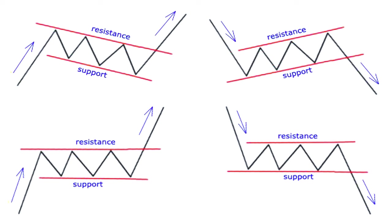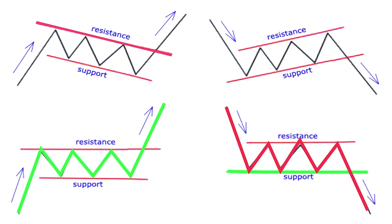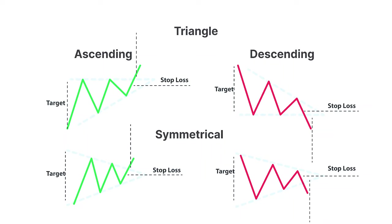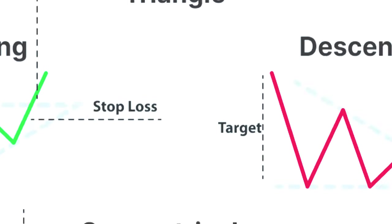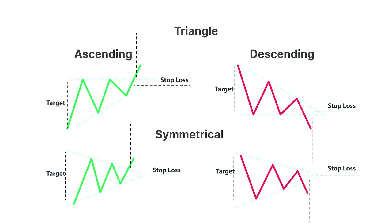If you master the following patterns, they will give you an edge in the forex market — these work most of the time. Number one: price channels. These are continuation patterns formed by parallel trend lines connecting resistance and support. Channels can slope upwards (bullish), downwards (bearish), or be horizontal. A breakout from the channel's trend line could indicate a trend reversal. Number two: triangles. Among triangles, we have ascending, descending, and symmetrical. These are bilateral patterns with converging trend lines indicating potential breakouts or breakdowns. To trade these, look for volume-supported breakouts or wait for a retest of the triangle for confirmation.